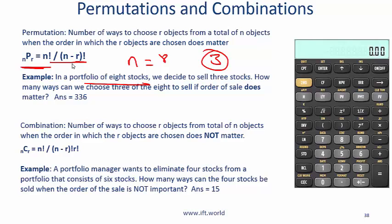But rather than use this formula I want you to use the calculator. So the way you do this is you plug in the 8 then 2nd then this NPR and then you plug in the 3. So that will give you the answer.